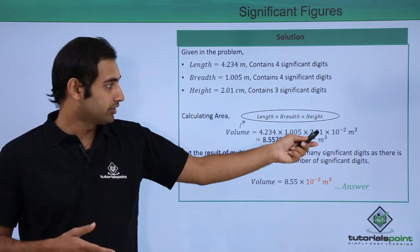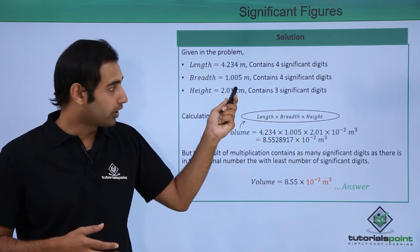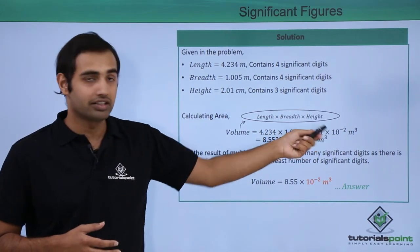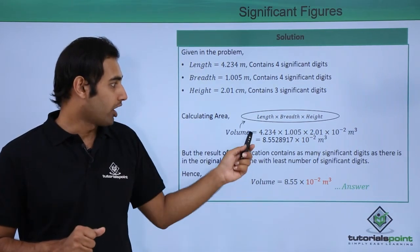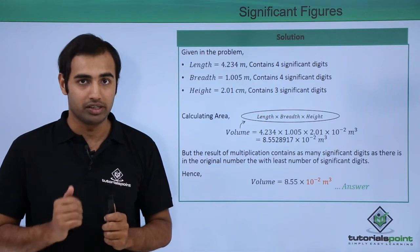Now once I carry on the multiplication I must remember that 2.01 is actually in centimeters. So I have to convert that into meters and that's exactly the conversion I have applied here. Now after I multiply these numbers I get this entire thing as my result by pure multiplication.